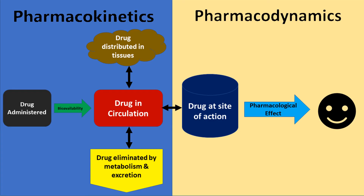When we're talking about pharmacokinetics, we're talking about how the drug is administered, how much of the drug makes it to the circulation — which we call bioavailability — where the drug goes, which tissues it gets into, and how quickly the drug is eliminated, metabolized, or excreted from the body. Pharmacodynamics is just the drug at the site of action and what it's doing — what effect does it have on the person you're giving it to.